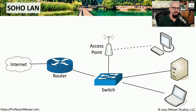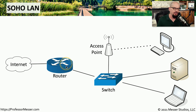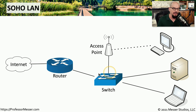Here's a common network configuration for a SoHo, a small office, home office. You have an internet connection. That internet connection usually has a router. Sometimes the router and the switch and the access point are inside the same device, but I've broken them out to show them differently on this diagram.